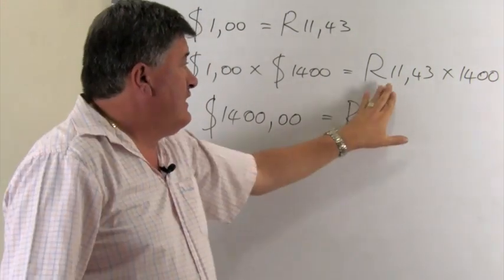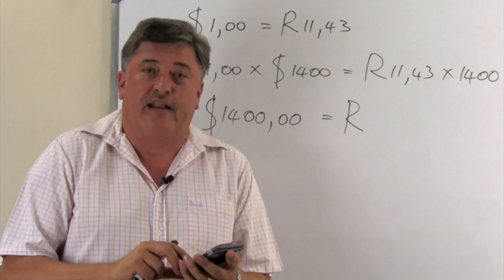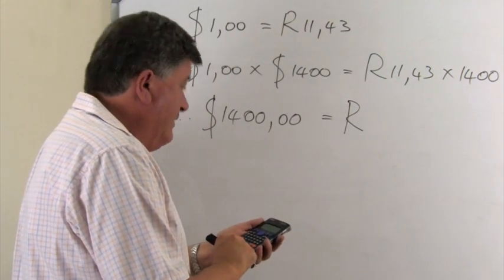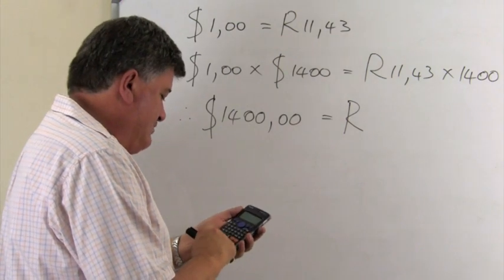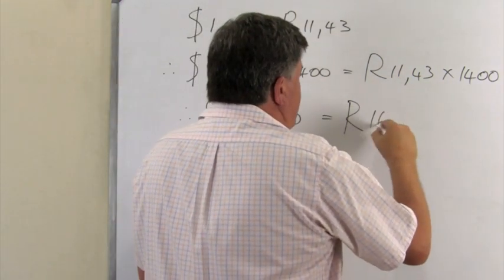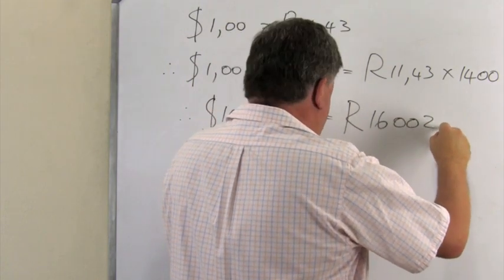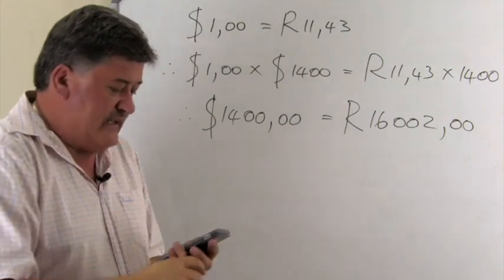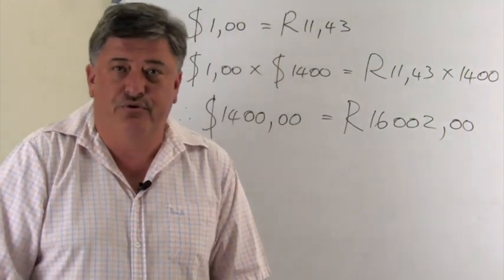So you will take now your calculator and we will do that multiplication. So our exchange rate of 11.43 times 1,400 and you will get, and this is an amount in Rand, you will get R16,002.